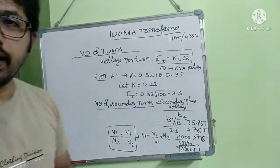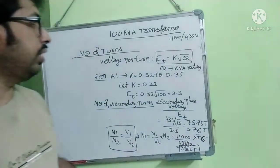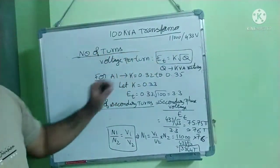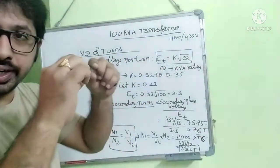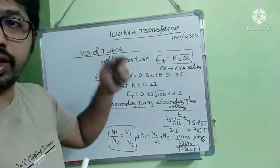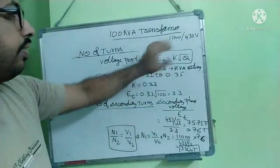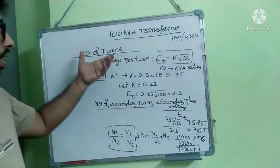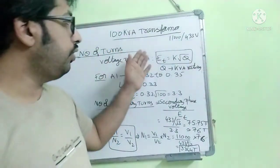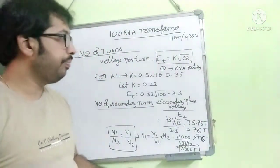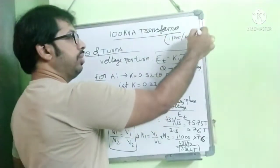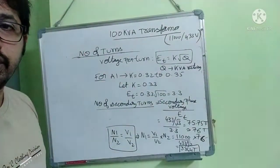Hello friends, in the last class we studied about the HV conductor's size. We derived the diameter of the HV conductor and area of cross section of that conductor. Today we are learning about the number of turns. We are trying to find the number of turns for HV and LV windings for a 100 kVA transformer, step down transformer 11000 by 433 volts.